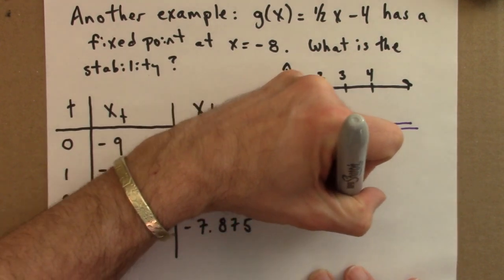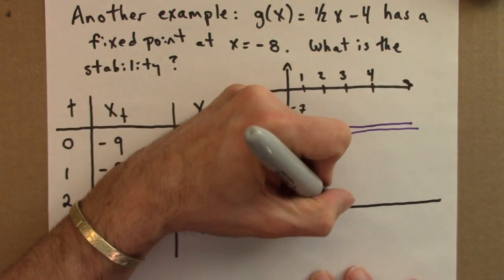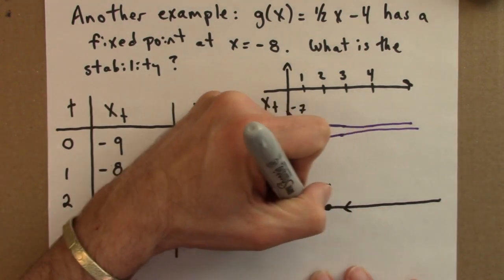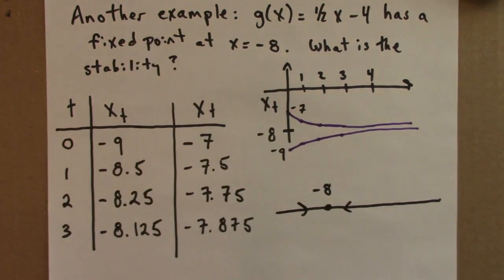And I could also draw a phase line for this. Here's minus 8. That's my fixed point. And nearby points get pulled towards it. So we would say that minus 8 is a stable fixed point.